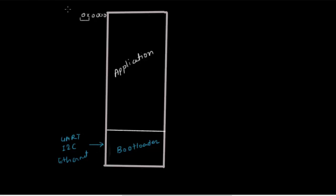The bootloader section is present on the controllers. If you're using a direct programmer that flashes a hex file directly into the flash, you need not worry about the bootloader section. However, if you have a USB-to-serial converter and want to program the controller with that, then you need to store a bootloader in memory. This is a more advanced topic, so we'll skip it for now and revisit it later in the series.